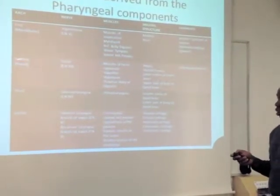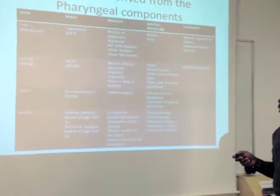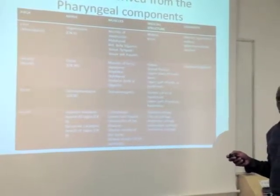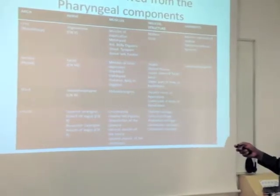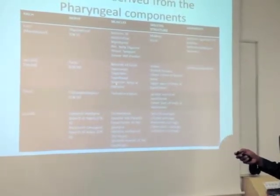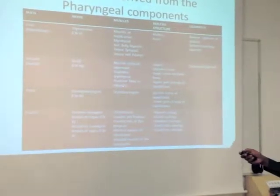Moving on to the second arch, which is mainly associated with the hyoid bone. You've got the facial nerve, cranial nerve number seven, which comes from there. It's going to supply the muscles of facial expression, the stapedius, the stylohyoid, and the posterior belly of digastric.